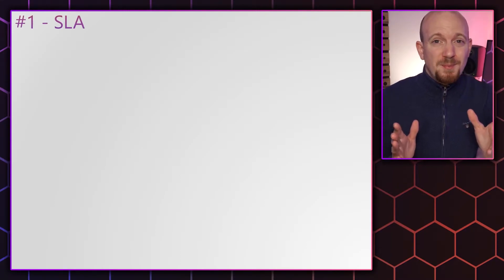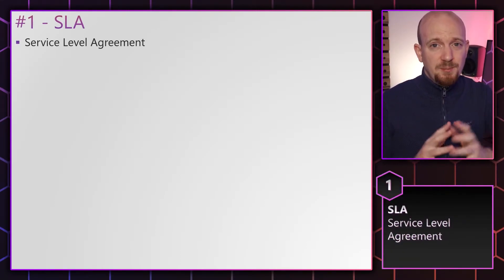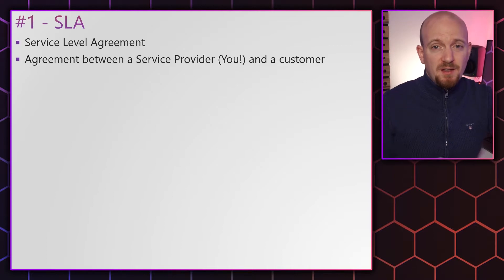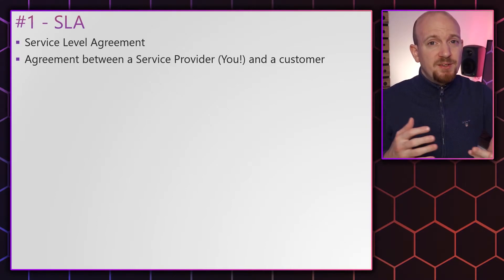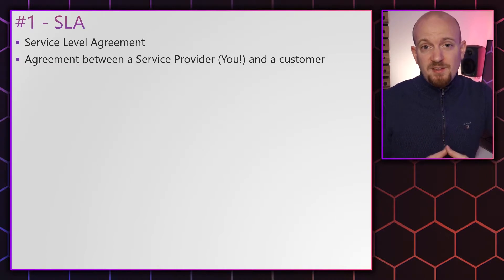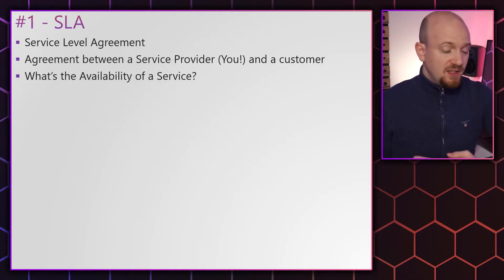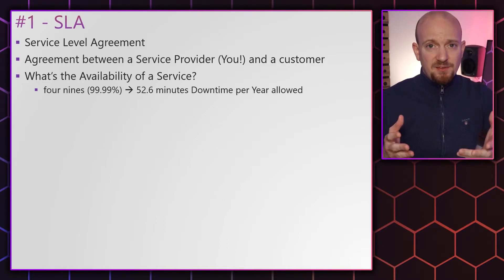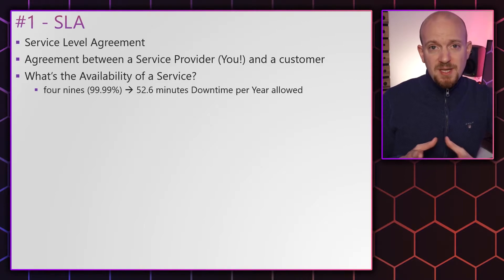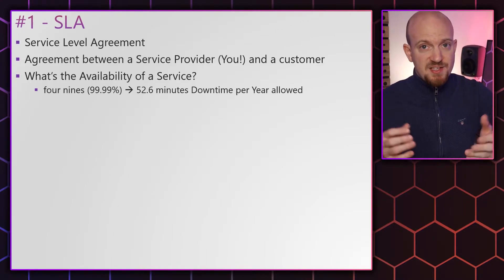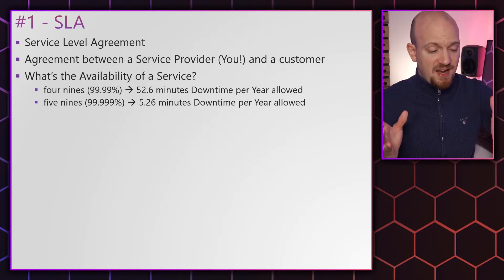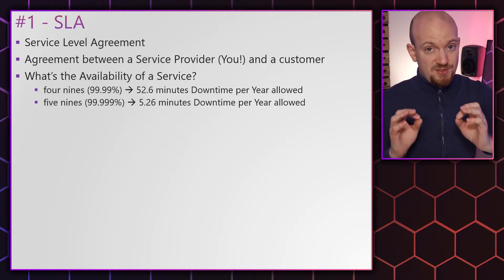First, let's talk about SLAs, which stands for Service Level Agreement. An SLA is an agreement between you as a provider and a customer. An SLA can regulate many different things depending on what system it is designed for. For example, in an SLA you can agree upon the availability of a service, like four nines which stands for 99.99%, allowing the system to be down for 52 minutes per year, or a 5-nine system which is 99.999%, allowing only five minutes of downtime per year.